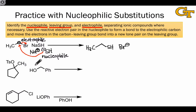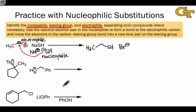In this second example, in searching for a nucleophile we find two atoms that bear lone pairs: this oxygen and this oxygen. In terms of the potential to act as a nucleophile, at least hypothetically, either of these oxygens could act as a nucleophile.